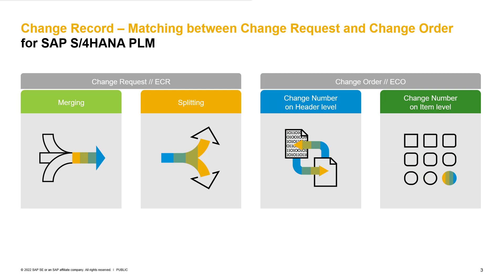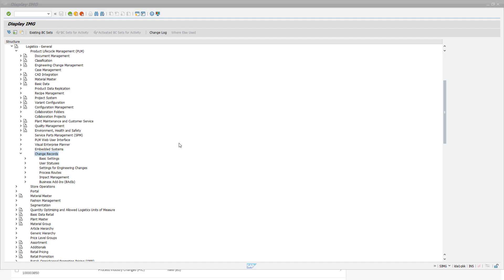Let's now jump into the system to have a closer look at how the merging and splitting, as well as the change number maintenance and generation, is working. First of all, I want to show you how the merge and split is maintained in our customizing.